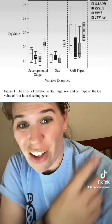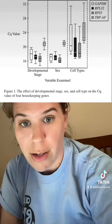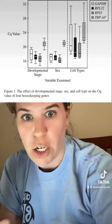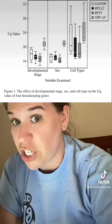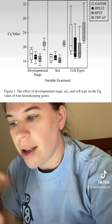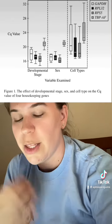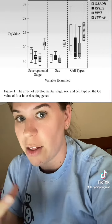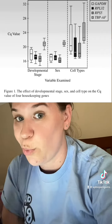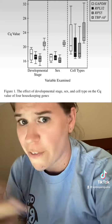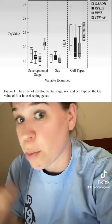The cell type is going to cause there to be a difference in expression, so just because you may have the same amount of gene doesn't mean you're going to be able to express it the same. It has to do with the differentiation of the cells — because one cell is differentiated to do one thing, it's going to potentially go through that gene expression more often to make that specific protein.